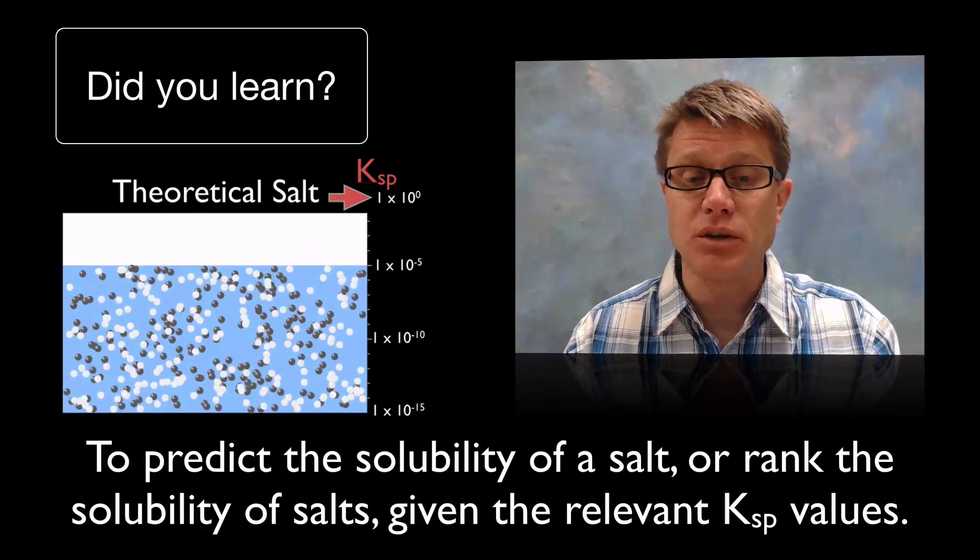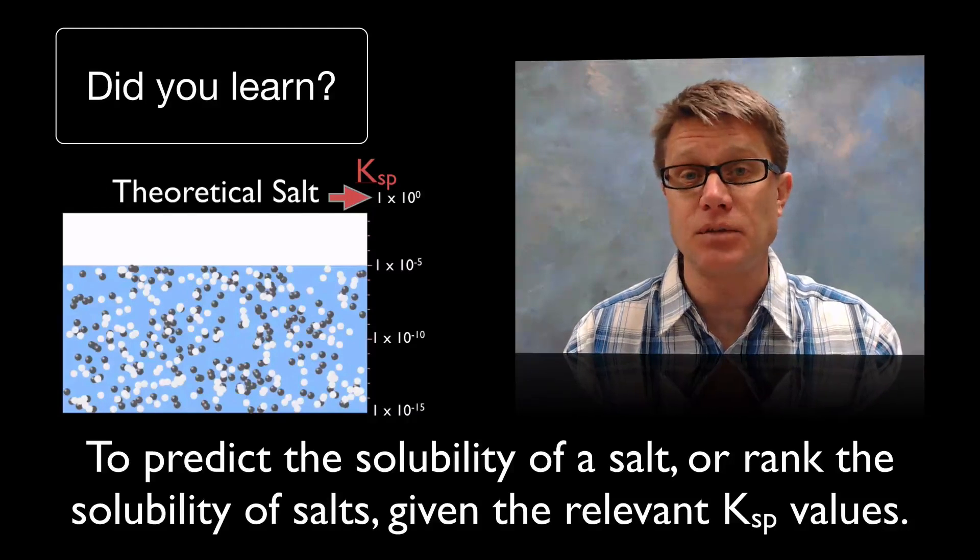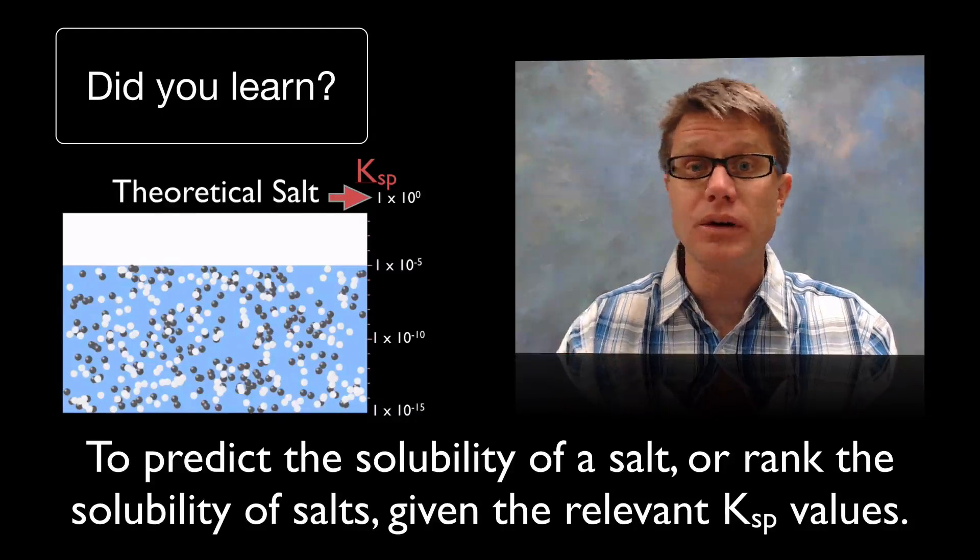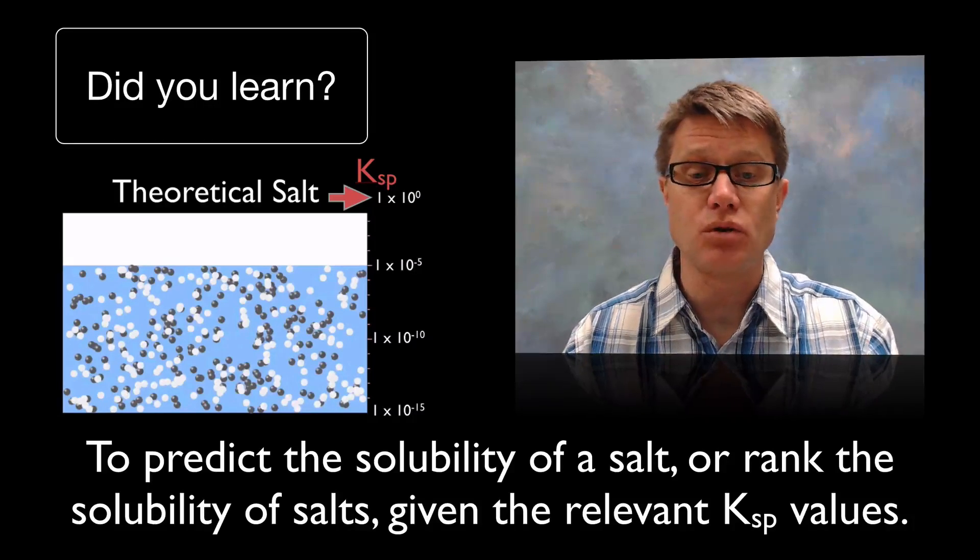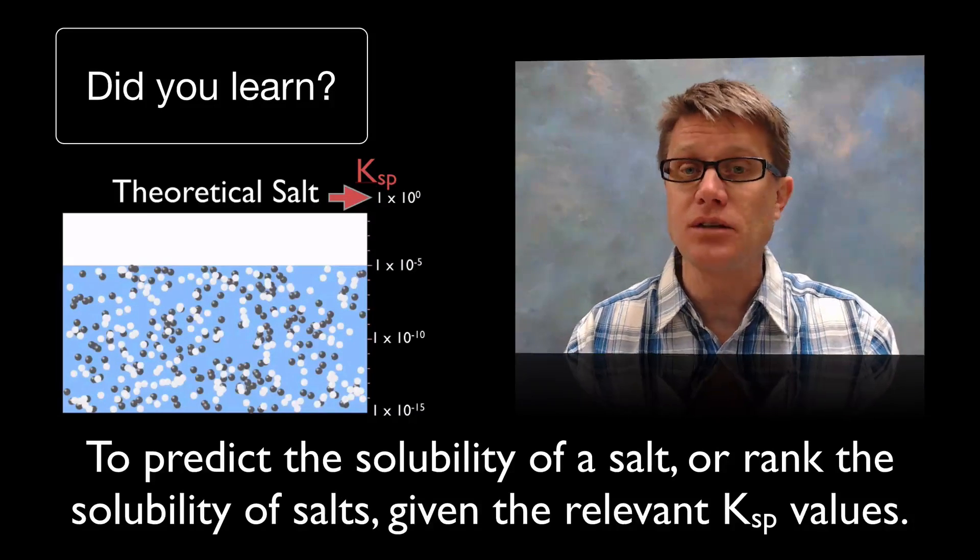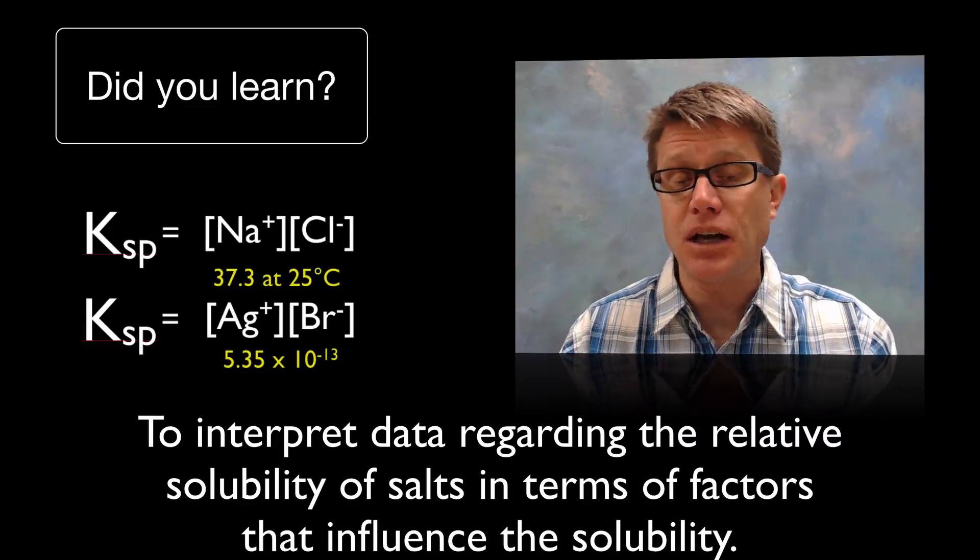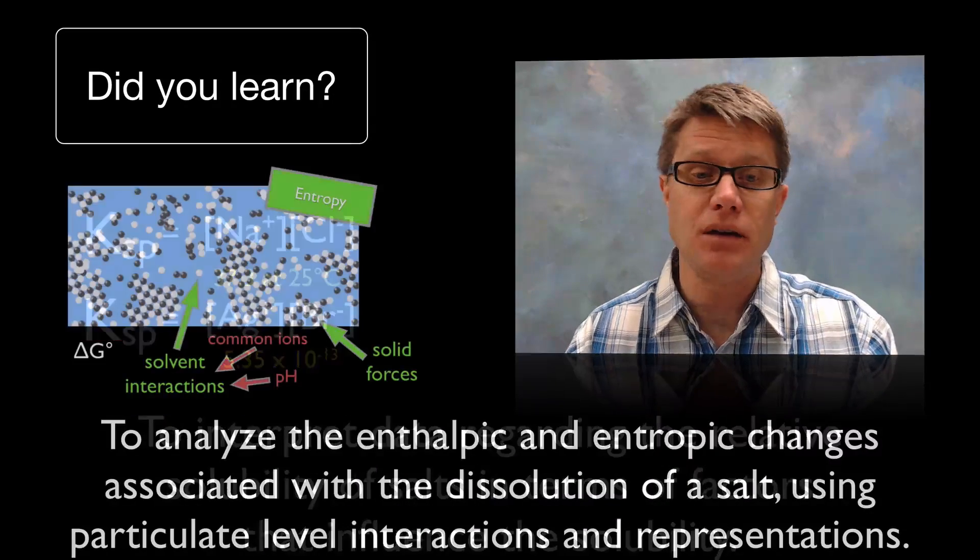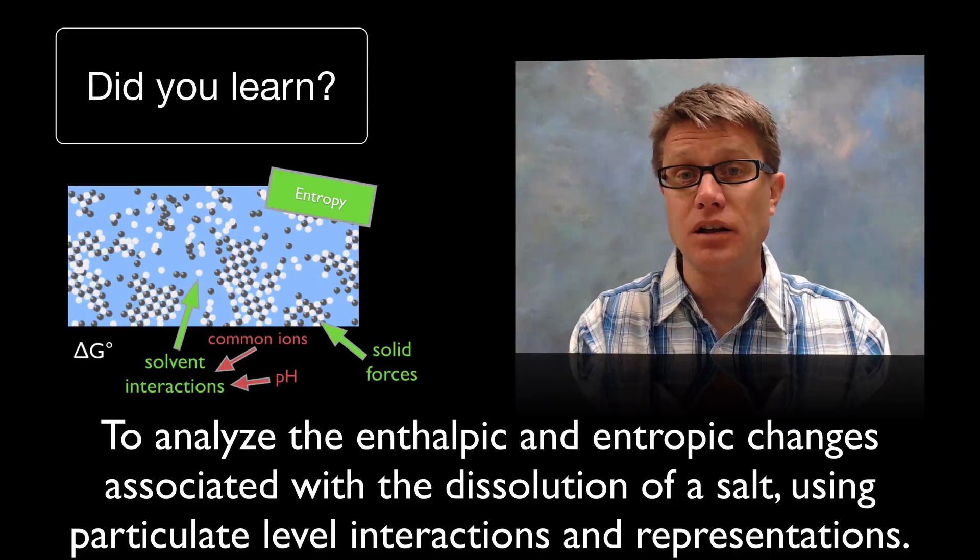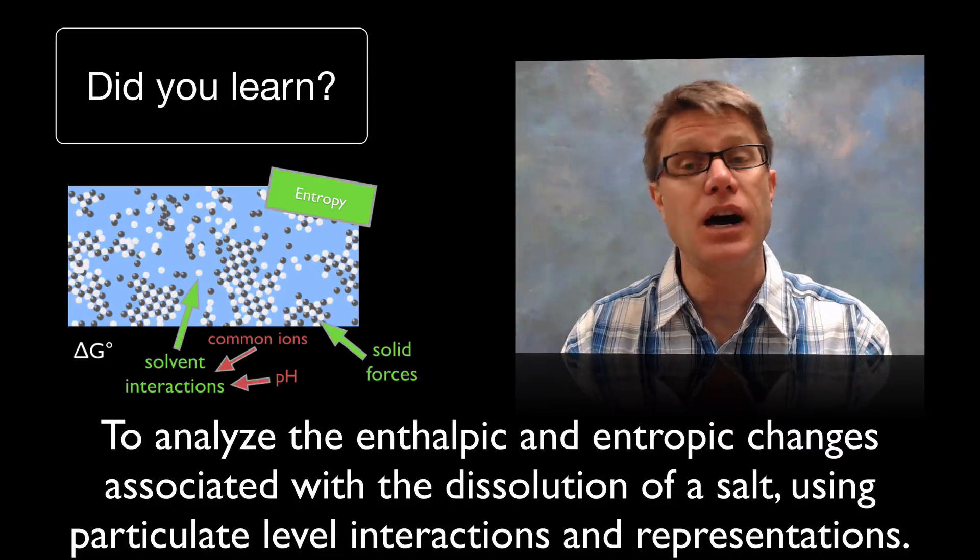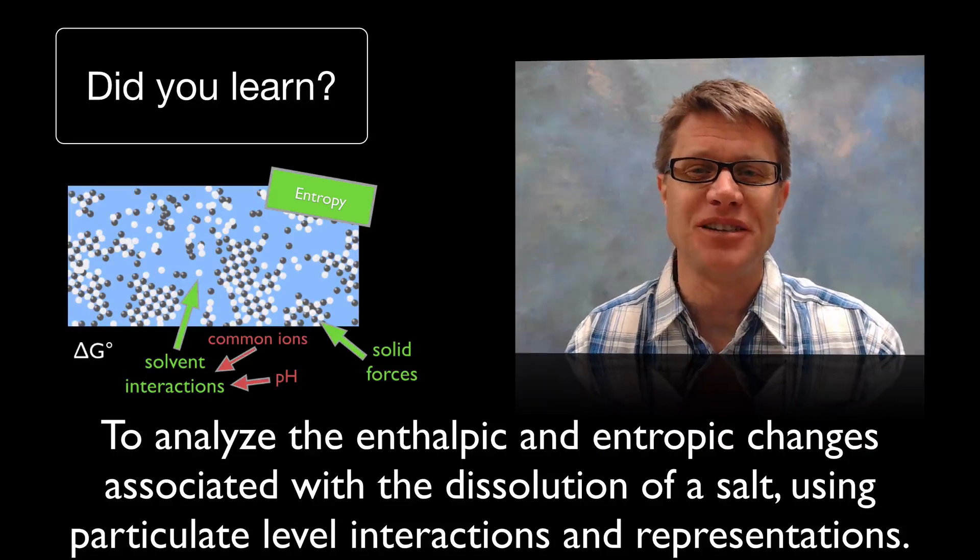And so did you learn to predict the solubility of a salt or rank its solubility given the Ksp values? Remember the lower it is the more likely it's be in the solid form or shifted more towards the left. The greater it is the more it's shifting towards the right. Also could you interpret data based on a Ksp value? How is that going to behave? And then finally can you look at what's going on inside the solid and inside the ions in relation to the solvent to predict our Ksp values? I hope so. And I hope that was helpful.